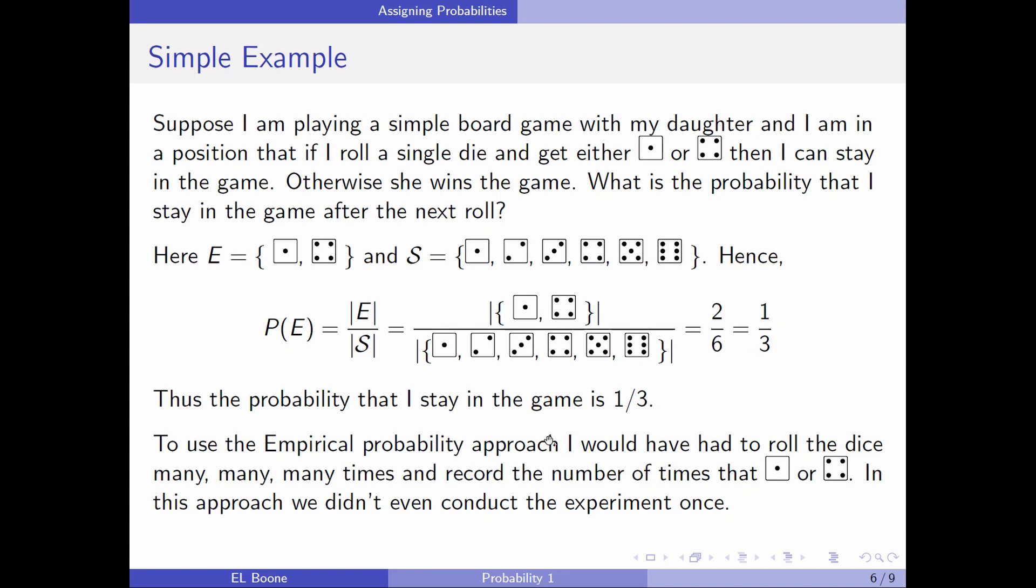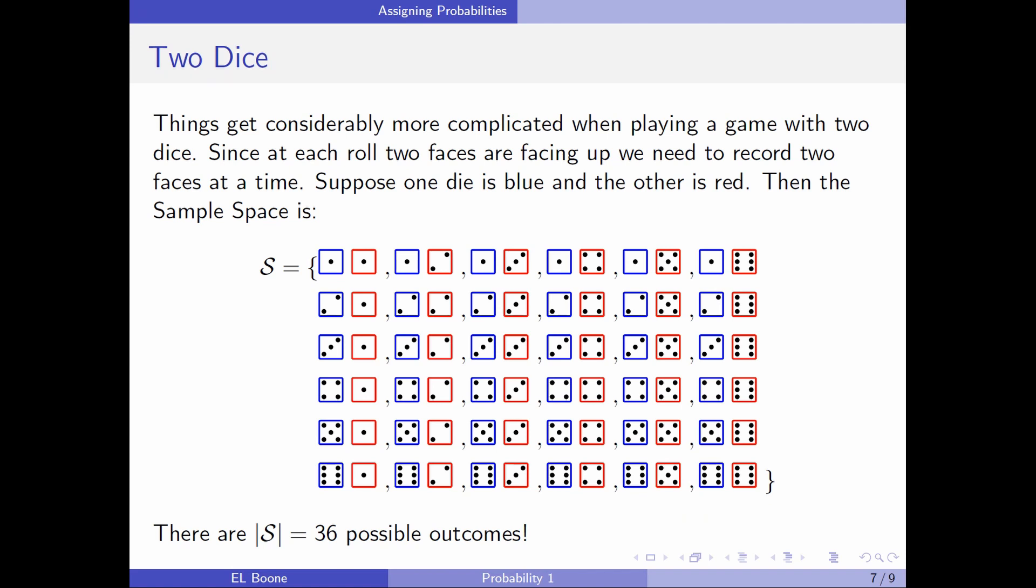To use empirical probability, I would have to roll the dice many, many, many, many times and record the number of times that either one or four showed up. In this approach, notice we didn't even roll the dice once. We just thought about it. So, let's get a little more complicated. What if I had two dice? And when you have two dice, everything gets more complicated.